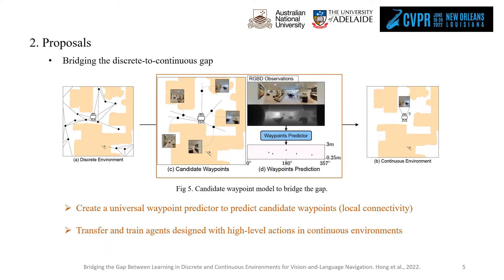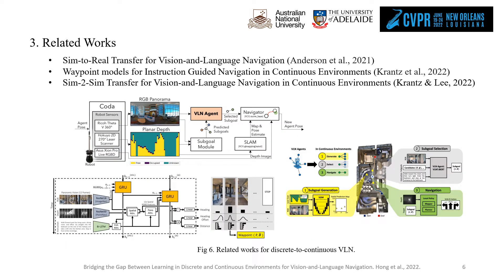To address the discrete-continuous gap, we create a universal waypoint predictor to predict candidate waypoints around the target, enabling the training and navigation of agents in continuous environments with high-level actions. A few related works, such as language-conditioned waypoint prediction, sim-to-sim transfer with local policy, and sim-to-real transfer with high-level actions, are shown here for interested readers.